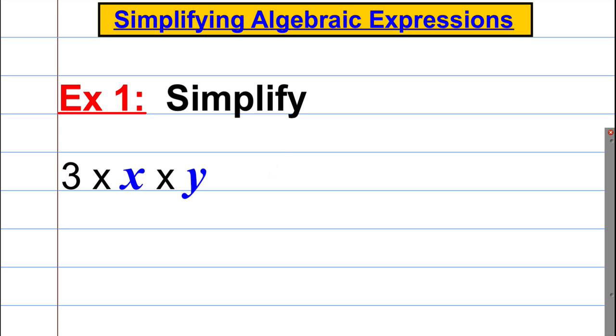We're asked to simplify 3 multiplied by x multiplied by y. A mathematician would simply write that as 3xy.